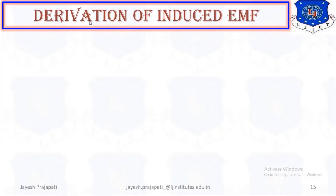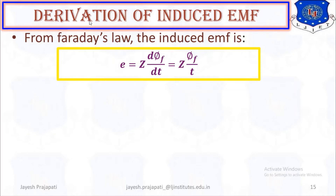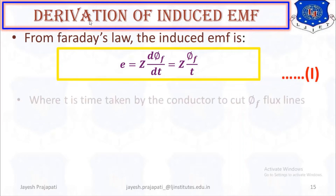Derivation of induced EMF. From Faraday's law of electromagnetic induction, the induced EMF is given by the equation E equals negative dΦf/dt, or E equals Φf/t. This is taken as equation number 1.